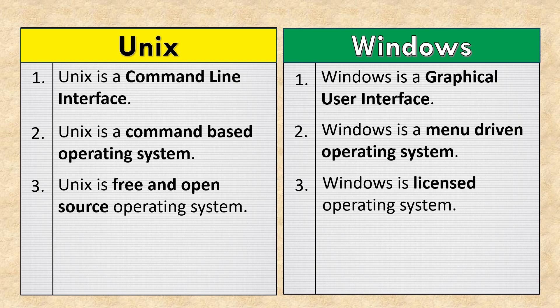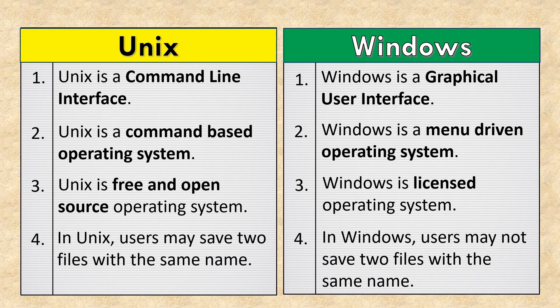Unix is a free and open-source operating system, while Windows is a licensed operating system. In Unix, users may save two files with the same name. In Windows, users may not save two files with the same name.